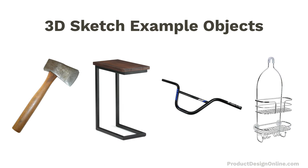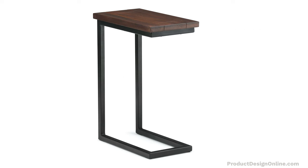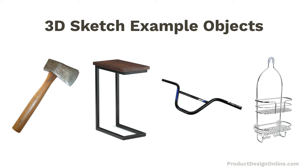The second object, the C-shaped table, is what we'll build in the remainder of this video. If you look at the frame of the table, you'll see that it's one continuous path of square tubing that's welded together. Because the shape is one continuous path, we can use the 3D sketch feature to sketch out the path, followed by using the pipe command.